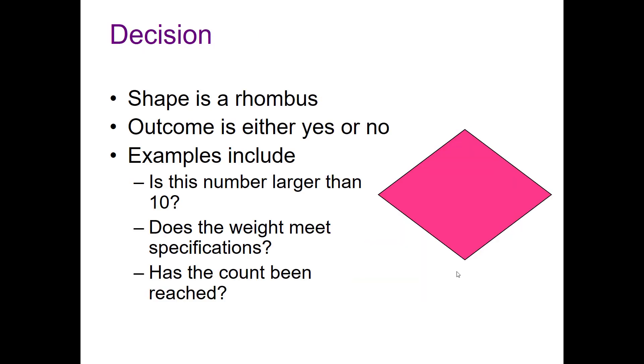And then we've got a decision branch or a decision block. This is going to be a rhombus shape. It's going to have an outcome of yes or no, 0 or 1, true or false, so on and so forth. Examples could include: is this number larger than 10? Does the weight meet specifications? Has the count been reached?